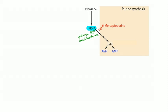Several steps requiring glycine, aspartate, glutamine, and tetrahydrofolate — so tetrahydrofolate is critical for both purine and pyrimidine synthesis — ultimately form IMP (inosine monophosphate), which goes on to form either AMP or GMP. The enzyme converting IMP to GMP is inosine monophosphate dehydrogenase, which is inhibited by the immunosuppressant mycophenolate.